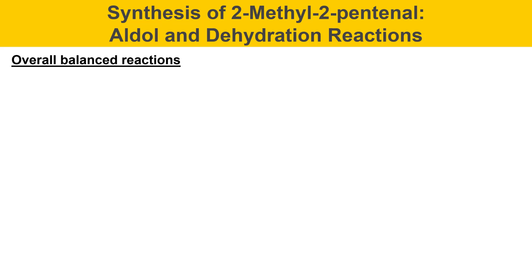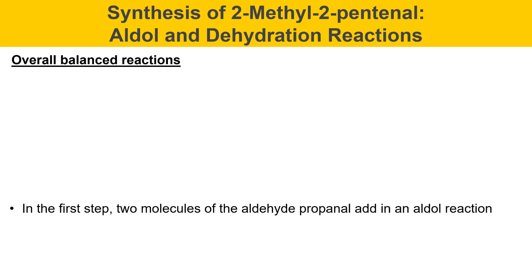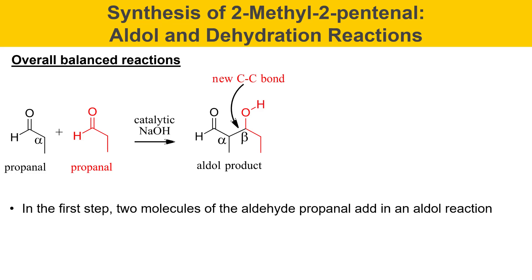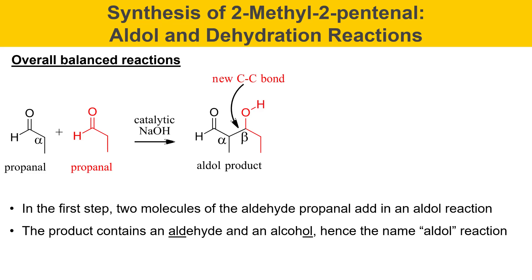These are the overall balanced reactions for the sequence. In the first step, two molecules of an aldehyde, propanol, add in an aldol reaction. Here's one molecule of propanol, here's the other, shown in red so that you can see where the atoms end up in the product. There's a position next to the carbonyl in propanol called the alpha position. The two propanol molecules add together in the presence of base to form the aldol product, making a new C-C bond. This product contains an aldehyde and an alcohol, and hence the name aldol.